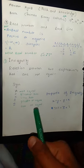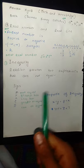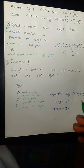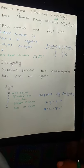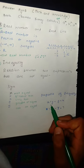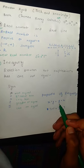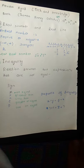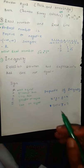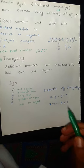For the property of inequality, if x is greater than y, then y is less than x. If 7 is greater than 5, then 5 is less than 7.